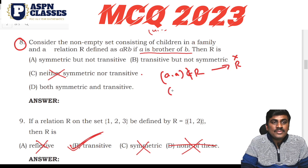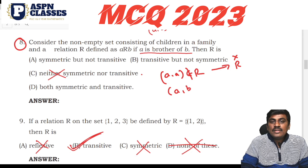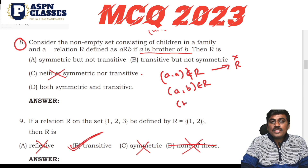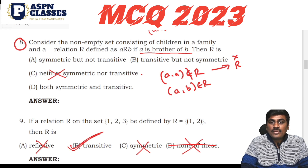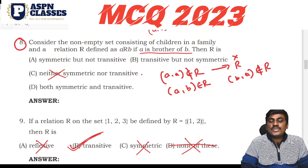But it is symmetric: if A is a brother of B, then reversing gives B is a brother of A. So (A, B) belongs to R implies (B, A) also belongs to R. This satisfies the symmetric condition.